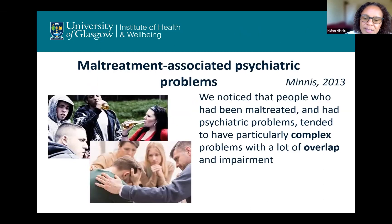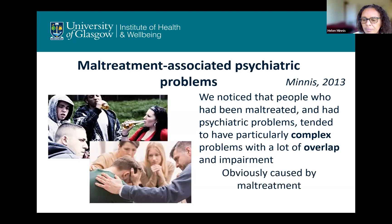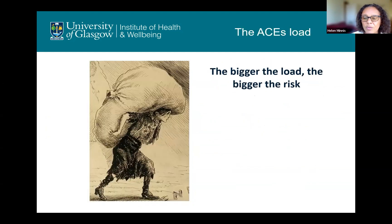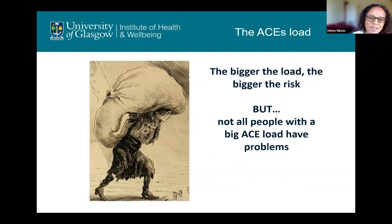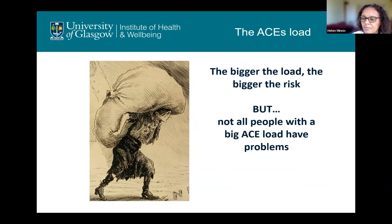So to put it crudely, the bigger the load the child is carrying, the bigger the risk. But we noticed clinically something even more intriguing: people who've been maltreated and who had psychiatric problems tend to have particularly complex problems with a lot of overlap and impairment. And obviously that is caused by maltreatment, right? Actually, it's not that simple, because not all people who've had a big ACE load go on to develop problems — there are many people out there who've experienced lots of terrible childhood experiences who are actually doing fine. So what else is going on?